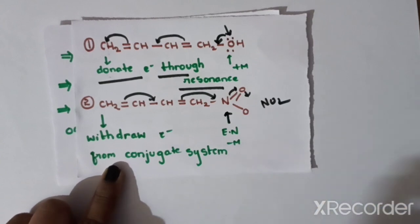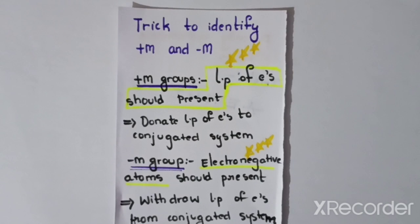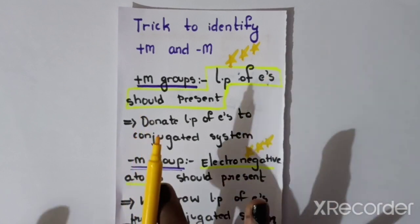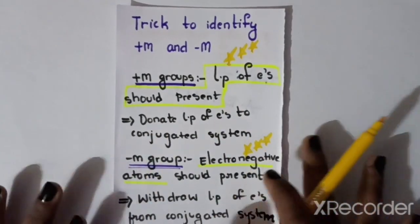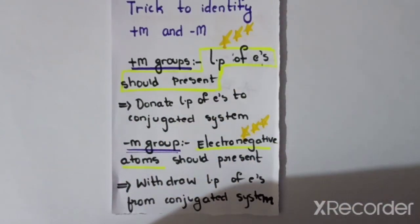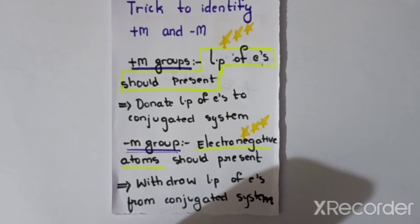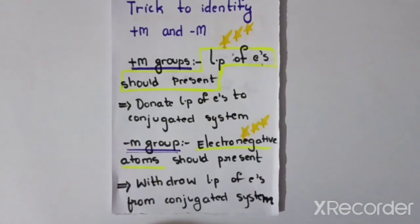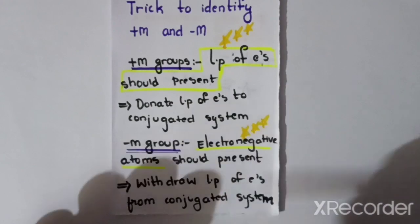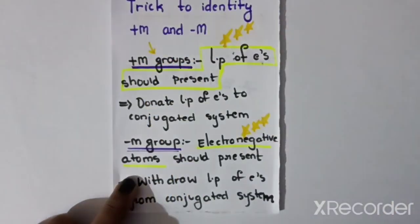This is an explanation of plus M effect and minus M effect. Plus M groups have lone pairs of electrons — those are plus M groups. Minus M groups have electronegative atoms — those are minus M groups. The plus M effect requires lone pair of electrons to be present — that is the key trick.